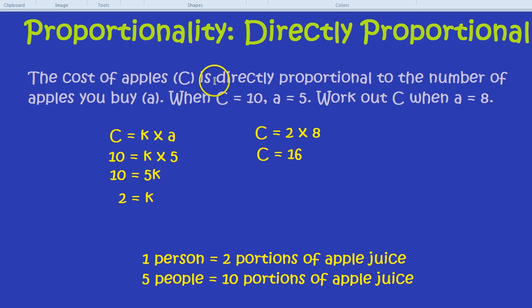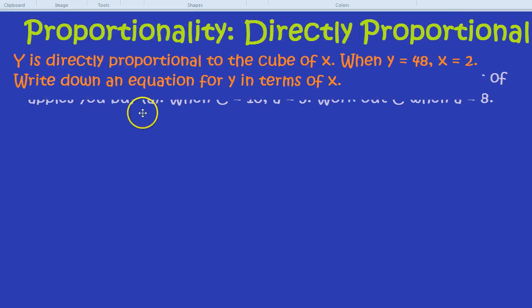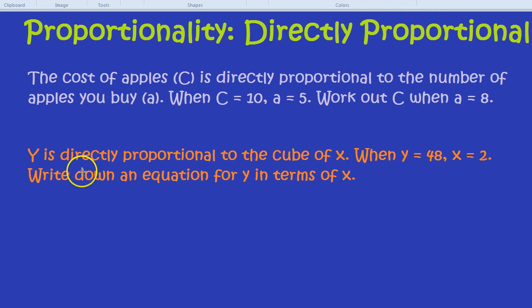Again, when you see the phrase directly proportional, it means as one thing goes up, the other thing goes up by a certain constant. And think portions - that might help remind you what this all means. Let's do another example. A harder example. You might get a question like this. This time you get cubes and squares and roots and that kind of thing.